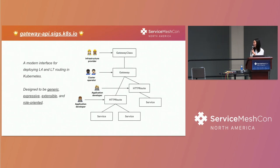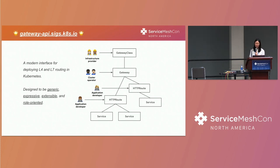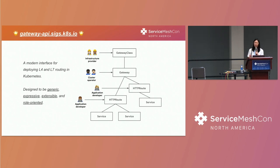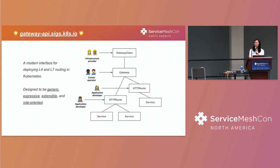So what is it? The Gateway API is a standardized set of APIs — a modern interface for deploying L4 and L7 routing in Kubernetes. It's designed to be generic, expressive, extensible, and role-oriented. I really want to highlight the role-oriented part because, going back to the Ingress API, now we have these separated resources which mirror real roles, and you can have non-admin people doing non-admin tasks. We'll go into more detail with that later.